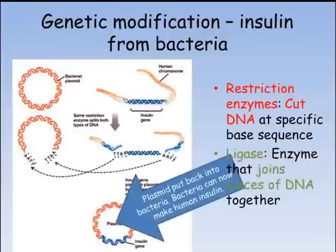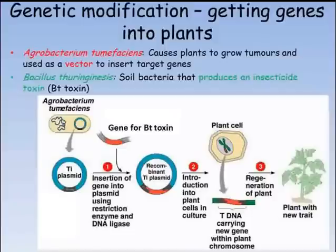Sometimes we want to add a gene to a plant rather than to a bacteria or yeast. For example, we might want to add a gene that allows the plant to produce an insecticide. This would be an advantage compared to a farmer spraying insecticide over the whole crop, as only those insects actually eating the crop would be affected, and no insecticide would be washed away and wasted by the rain. Bacillus thuringiensis is a bacteria that lives in soil and produces a toxin that is poisonous to insects.